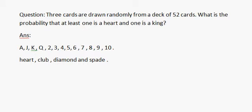Now the question is: three cards are drawn randomly from a deck of 52 cards. What is the probability that at least one is a heart and one is a king? So we need to focus on heart and king.